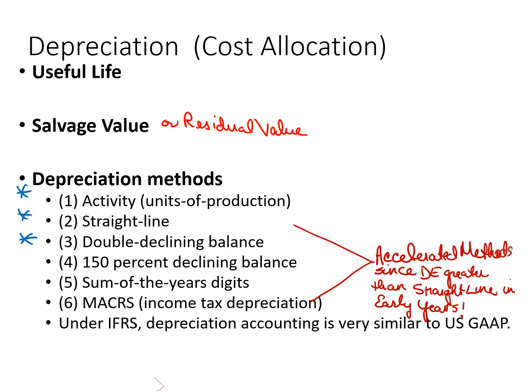We know about useful life and salvage value — those are the two things you need to know, along with the cost of the asset. Once you know the cost, the useful life, and the salvage or residual value, you can compute the depreciation for the journal entry.